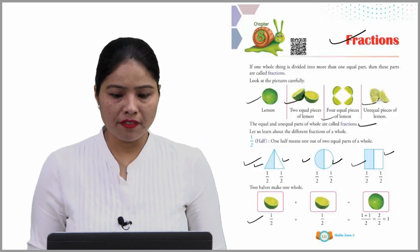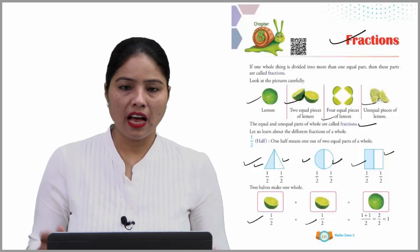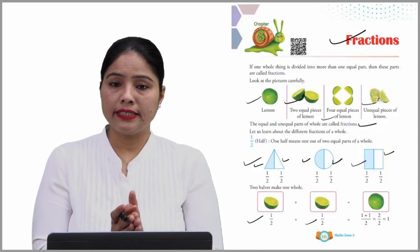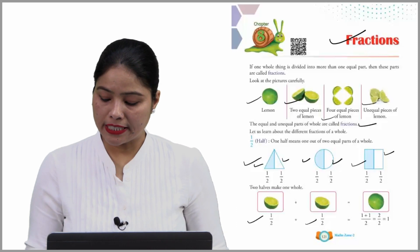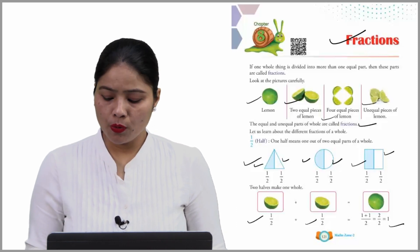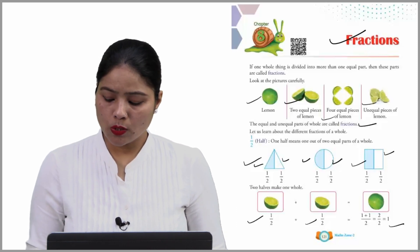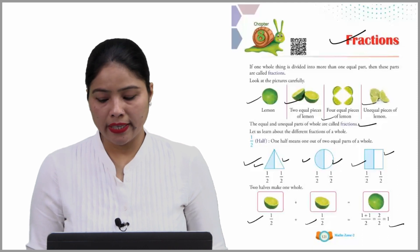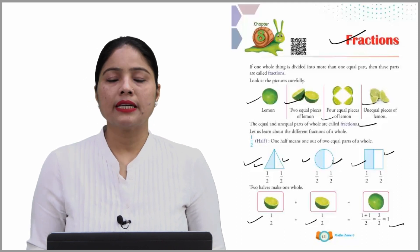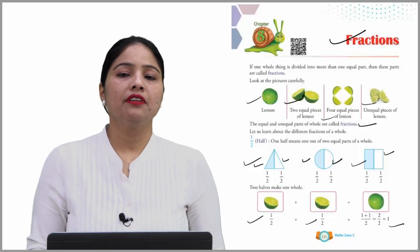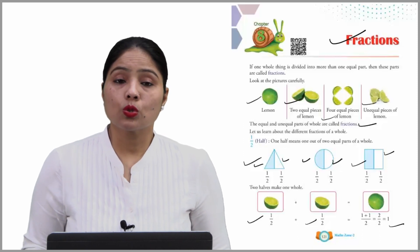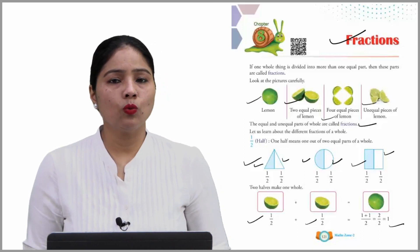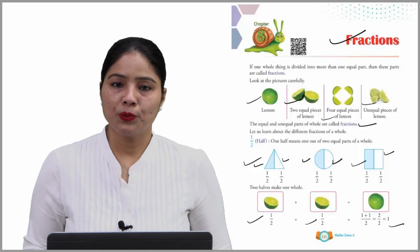This is half. If you add half with half — half में half add करोगे — then you will get completely one. One plus one is equal to two और नीचे two का two ही रहेगा. Two में से two अगर हम cancel करते हैं, then we will get our answer one. So, this is the concept of two halves make one whole.